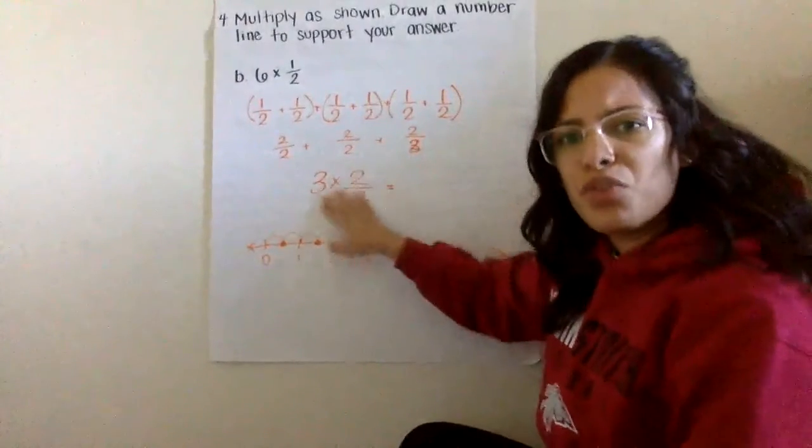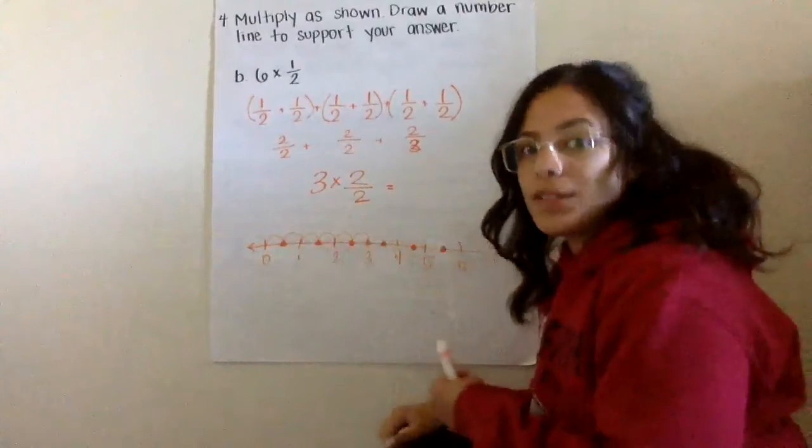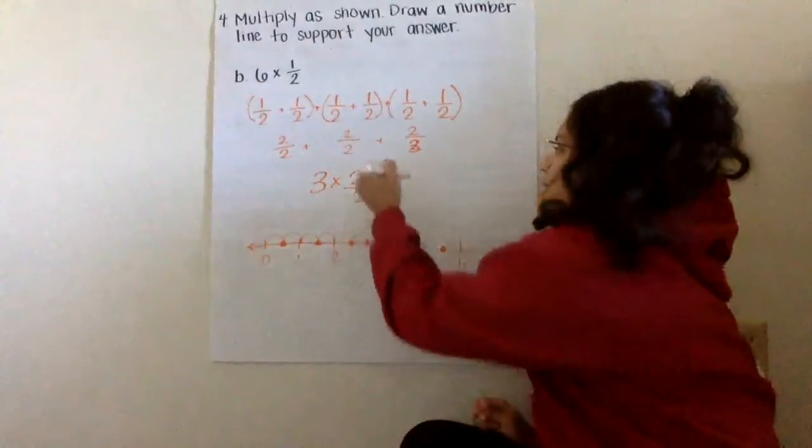When I create that new multiplication sentence, I have three times two halves. Now we know that two halves is equivalent to one whole. That gets to be my product of three.